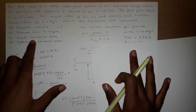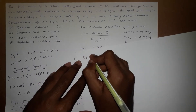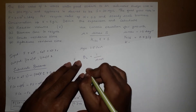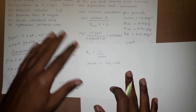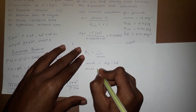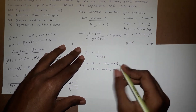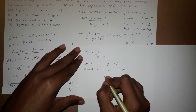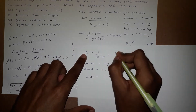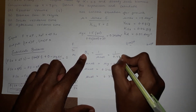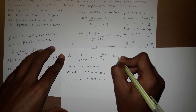Next, we find the solids residence time θC. θC = 1 / μnet, and μnet = μG − Kd = 0.346 − 0.07 = 0.276 day⁻¹. Therefore θC = 1 / 0.276 = 3.621 days.